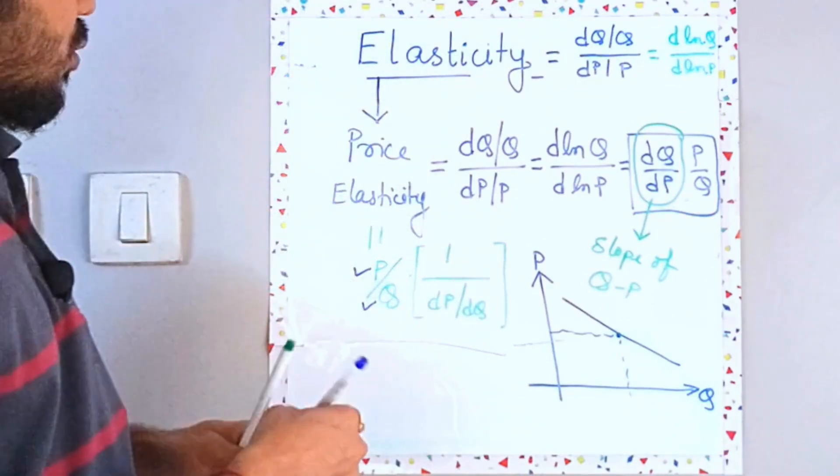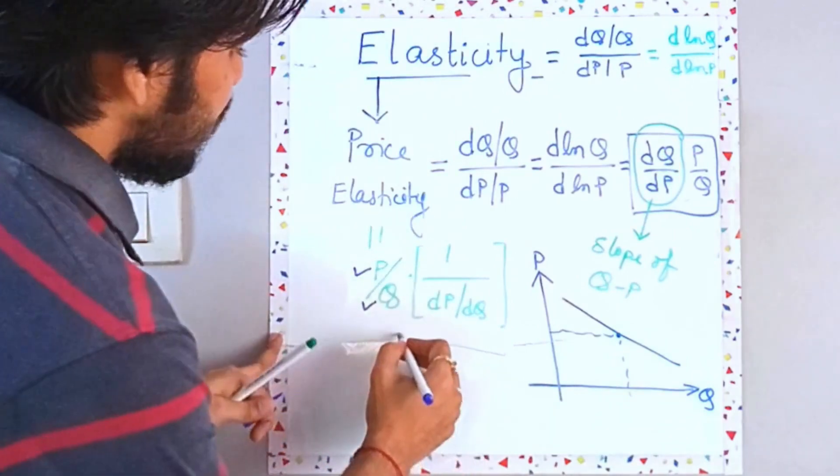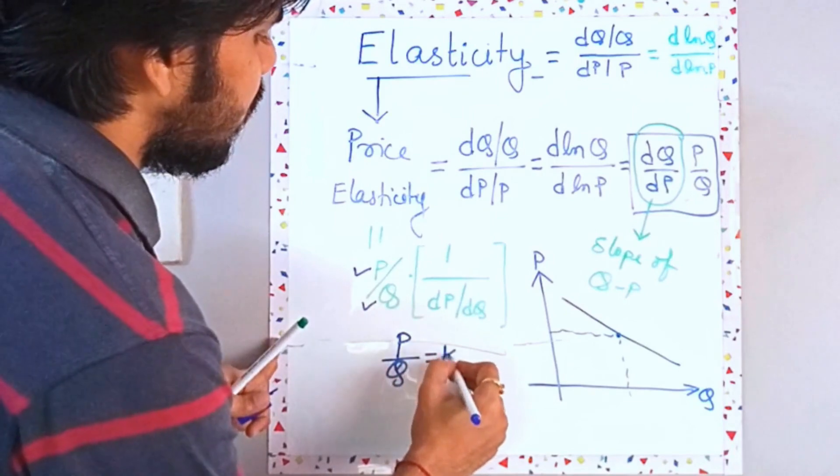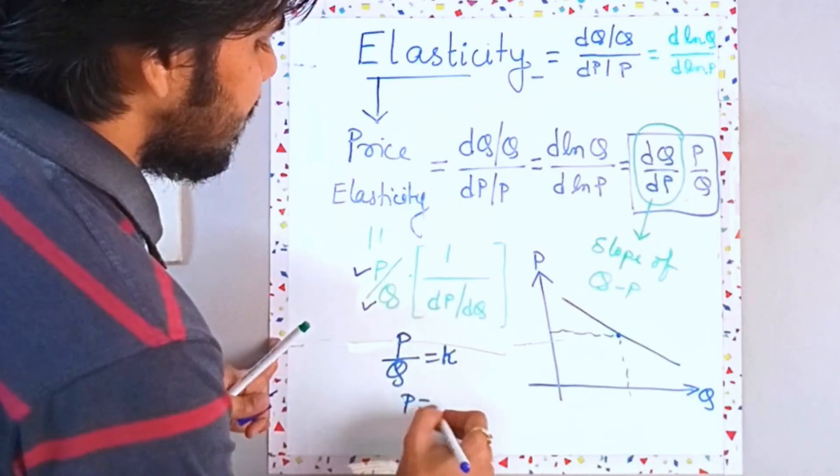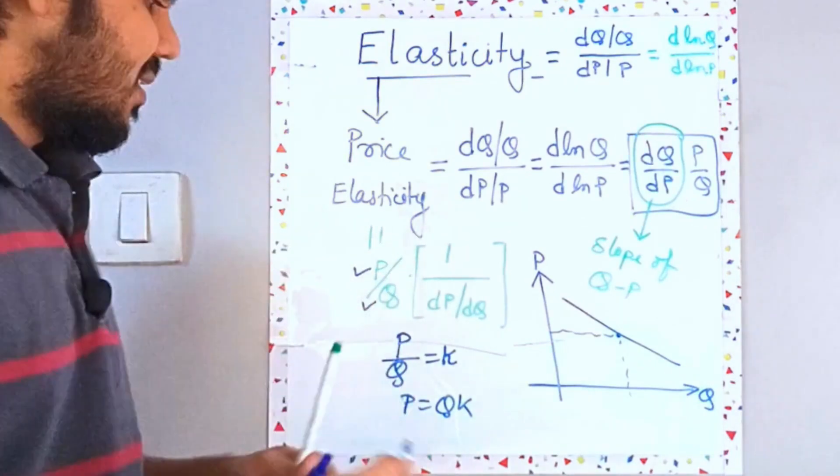Now let's try to understand what is the idea when we have P by Q constant. So when you take P by Q as some constant is equal to K, your P is going to be Q times K, right? Which is like a linear from the origin.